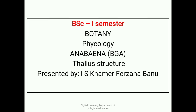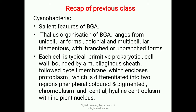The topic is Anabaena — blue-green algae — its thallus structure. Coming to a quick recap of the previous class: salient features of blue-green algae or cyanobacteria include thallus organization ranging from unicellular forms to colonial and multicellular filamentous forms with branched or unbranched structures. Each cell is a typical primitive prokaryotic cell having a cell wall bounded by a mucilaginous sheath, followed by a cell membrane enclosing protoplasm, which is differentiated into two regions: peripheral pigmented chromoplasm and central hyaline centroplasm with an incipient nucleus.